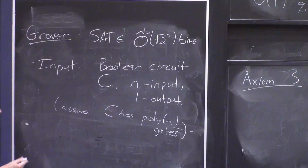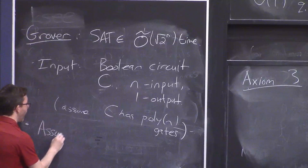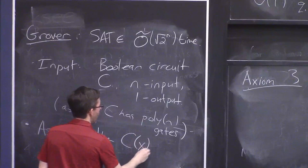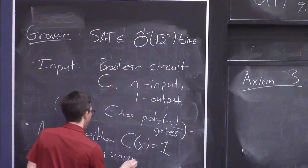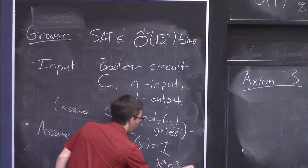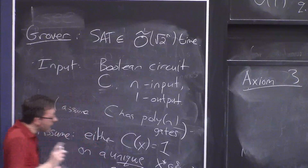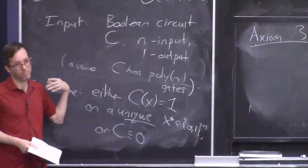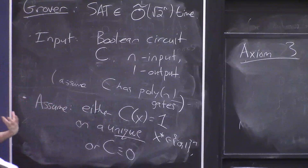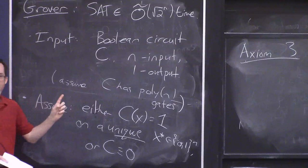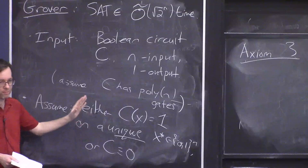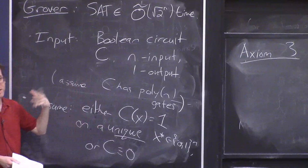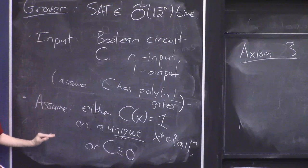I'm going to make one simplifying assumption which is not necessary for Grover's algorithm, but I'm making it because we only have about 21 minutes left in this lecture. Assume that either C of x equals 1 on a unique string — which I'll call x-star — or it always outputs 0. Technically this makes the problem easier, but intuitively this is the hardest case. When there's just one string that makes it output 1, you've got to worry about that possibility. You can reduce the general case to this case, at least with some randomization. This will make the presentation of Grover's algorithm simpler.